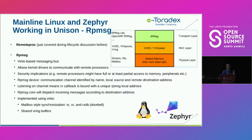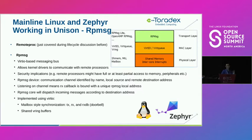Mainline Linux and Zephyr can work in unison communicating via RPMsg. RPMsg is the transport layer; it uses virtio/virtqueue as the MAC layer, and at the physical layer uses regular shared memory plus inter-core interrupts — typically mailbox or messaging units. One important security implication: M4 cores often have broad or full access to system memory, so however well you lock down Linux, firmware running on the M4 could access all memory.